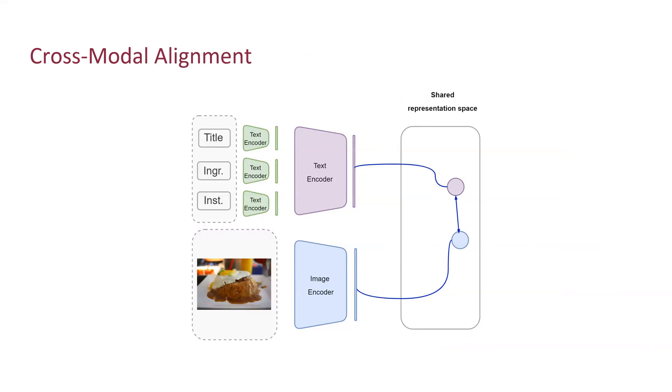Previous works align the recipe and image embeddings in a shared representation space, and often they use separate transformers for textual components and later combine them to achieve a single text embedding. The training objective here is to bring this textual embedding closer to the image embedding. However, such approaches implicitly assume that all three textual components—the title, the ingredients, and the instructions—will always be available.